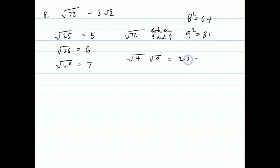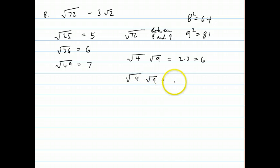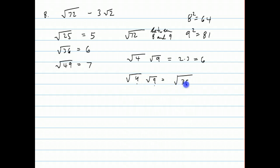Which is equal to 2 times 3, which is equal to 6. You could also have — and you're allowed to do this — just multiply the numbers inside, so 4 times 9 is 36, and you're allowed to do that. So you can take something like the square root of 2 times the square root of 5, and you could say that equals the square root of 10.